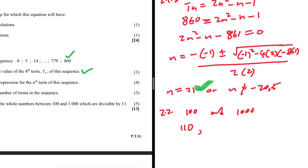We also need the largest number closest to 1000 that is divisible by 11. Checking: 99 × 11 is way more than 1000, but 90 × 11 = 990. So the first term of this sequence is 110 and the last term is 990. The common difference is 11 since we add 11 each time.